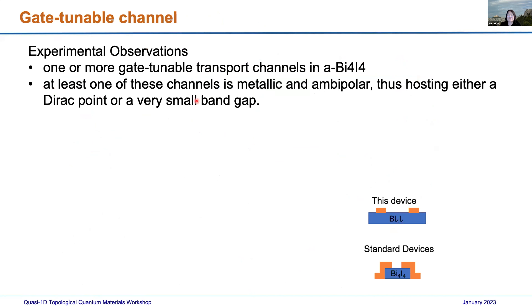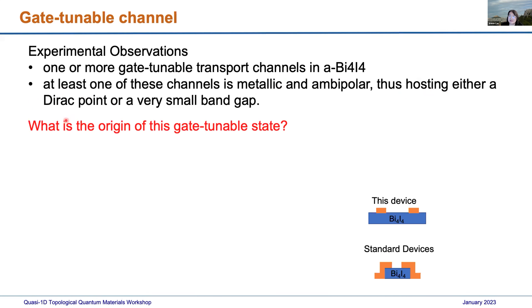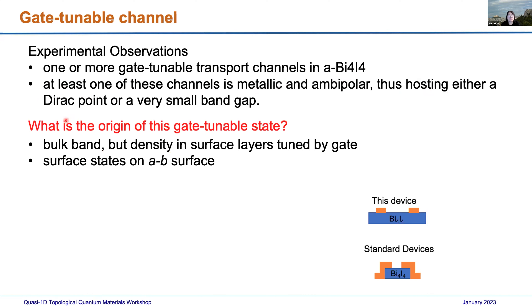In summary, we have observed a gate-tunable transport channel in alpha bismuth iodide. This channel is metallic and bipolar, therefore hosting either a Dirac point or a very small band gap. The question now is what is the origin of this gate-tunable channel. We need to first exclude mundane mechanisms — for example, a bulk band whose density in surface layers is tunable by gate, or surface states on the a-b surface, although that's unlikely given the relatively large gap expected there.